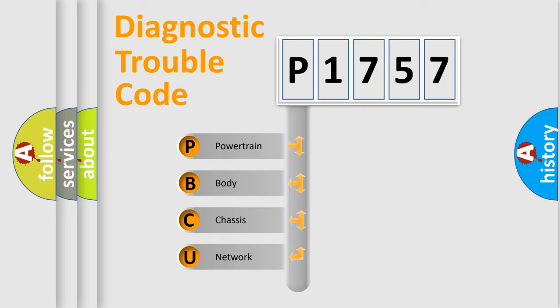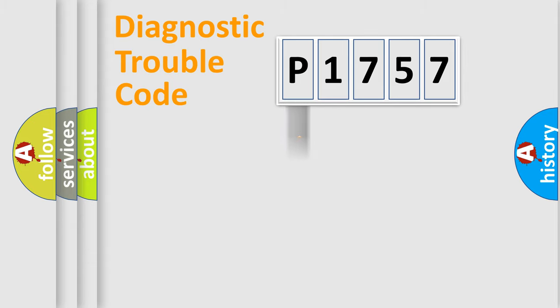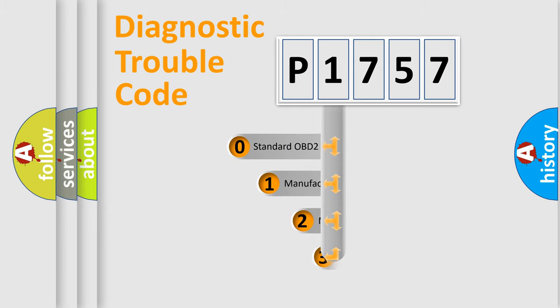We divide the electric system of an automobile into four basic units: Powertrain, Body, Chassis, and Network. This distribution is defined in the first character of the code.